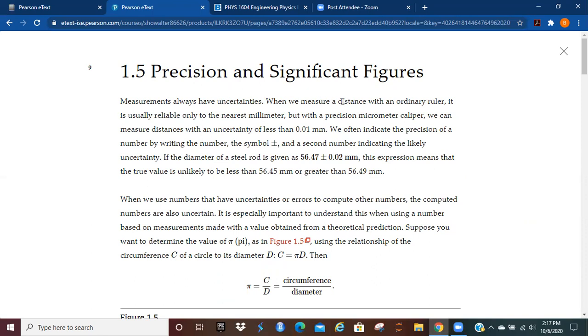We're always going to have uncertainties with measurements when we measure distance with an ordinary ruler. It's usually reliable only to the nearest millimeter. But with a precision micrometer caliper, we can measure distances with an uncertainty of less than 0.01 millimeters. So that's pretty good. That's far more precise. And so we often indicate the precision of a number by writing the number and then the symbol plus minus and then a second number indicating the likely uncertainty. So if we have a diameter of a steel rod and it's given as 56.47 plus or minus 0.02 millimeters, the expression means that the true value is unlikely to be less than 56.45 or 0.02 millimeters less than this or greater than 56.49 or 0.02 millimeters more than that.